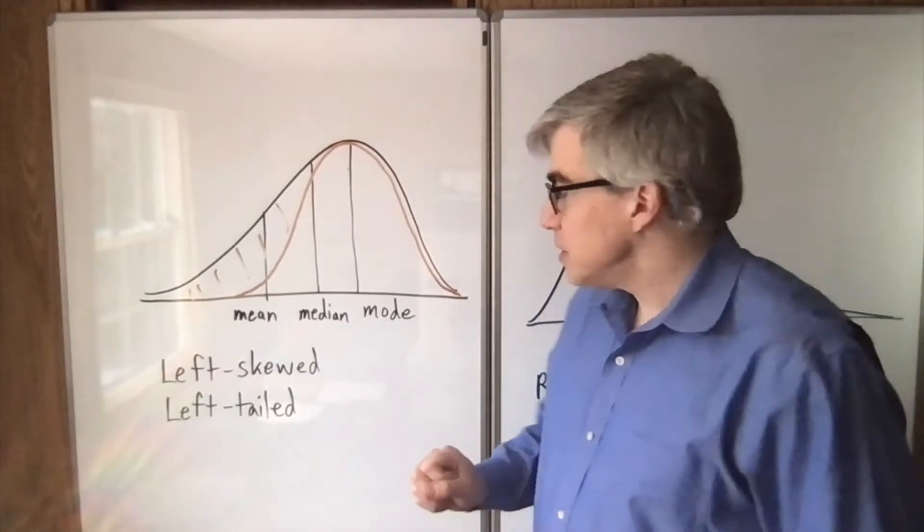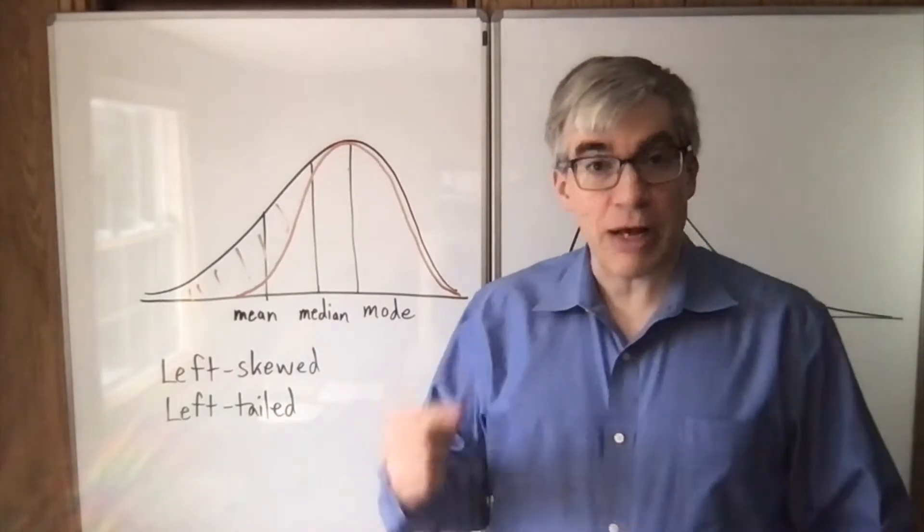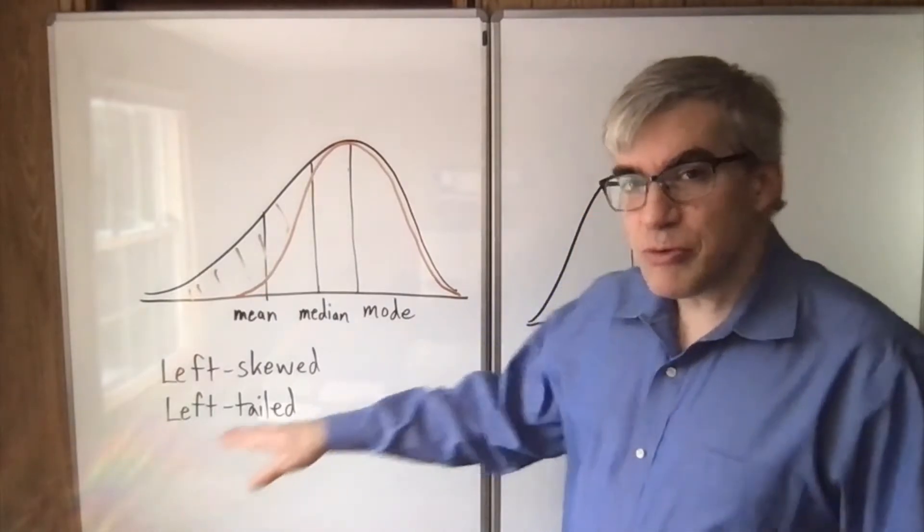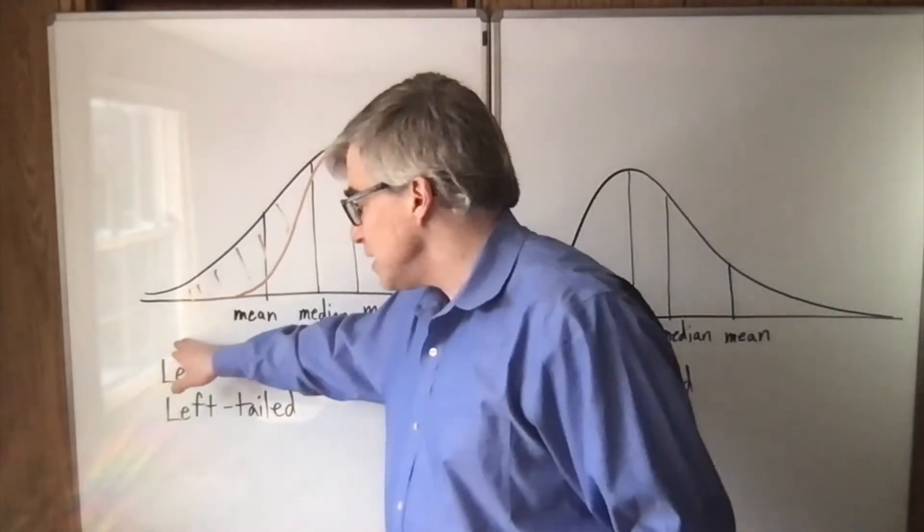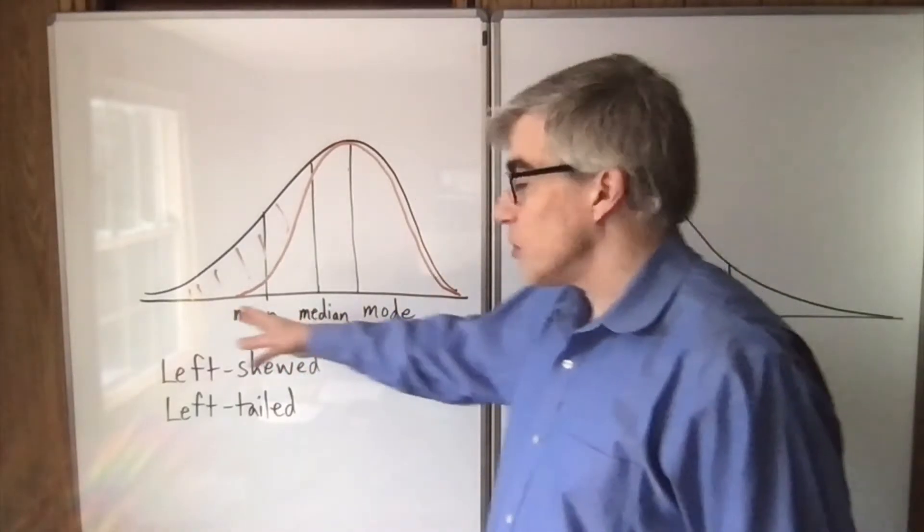Another detail is mean, median, and mode. I think they teach them that way because they're in alphabetical order. Mean, then median, then mode. Well on a left skewed distribution, that tends to be the order that they are in. Mean, then median, then mode going left to right.